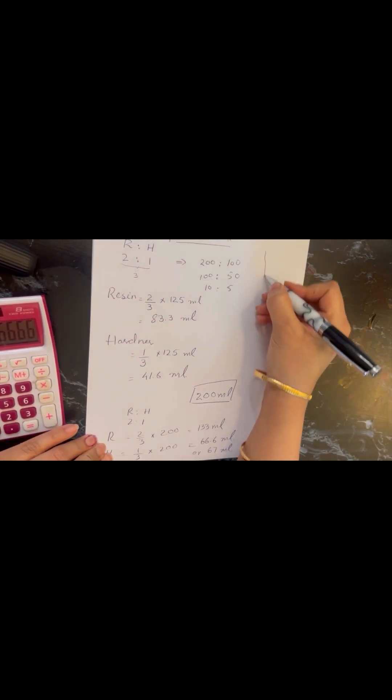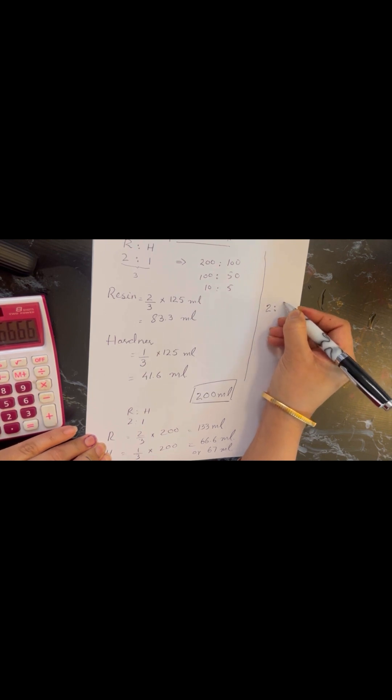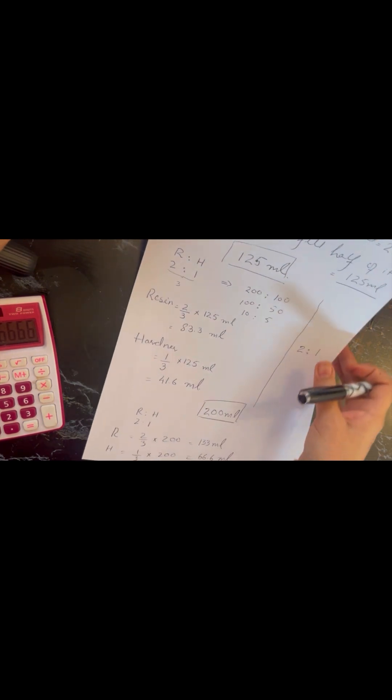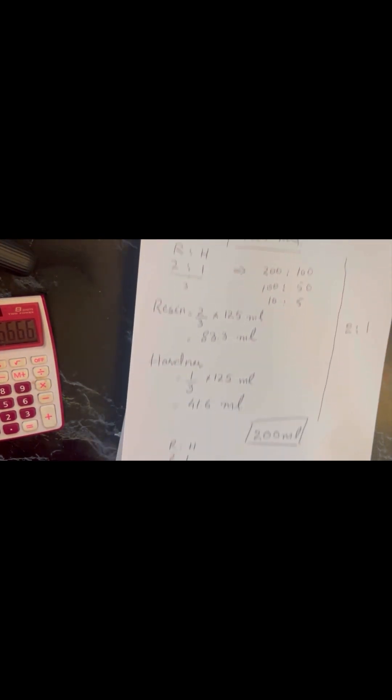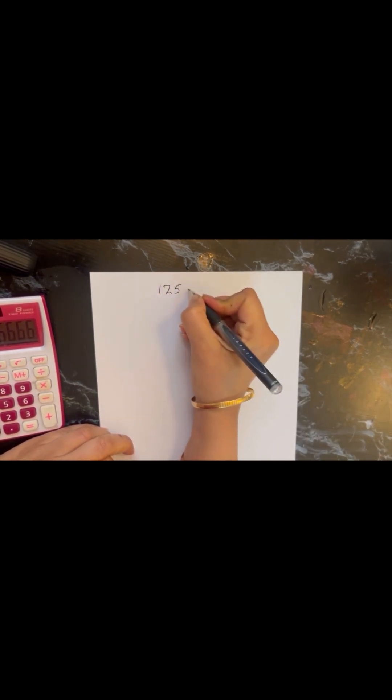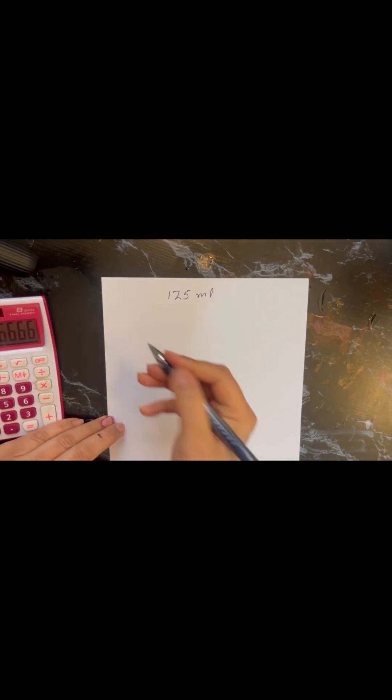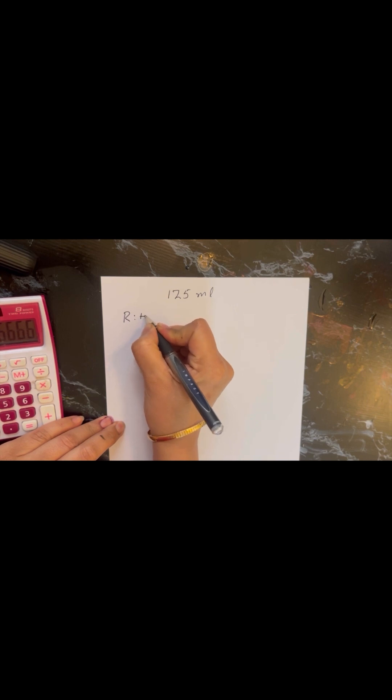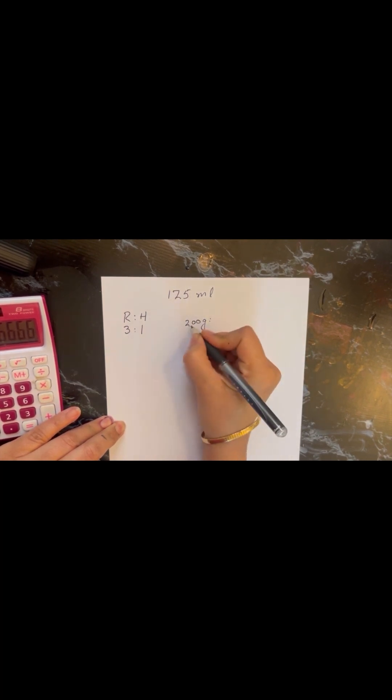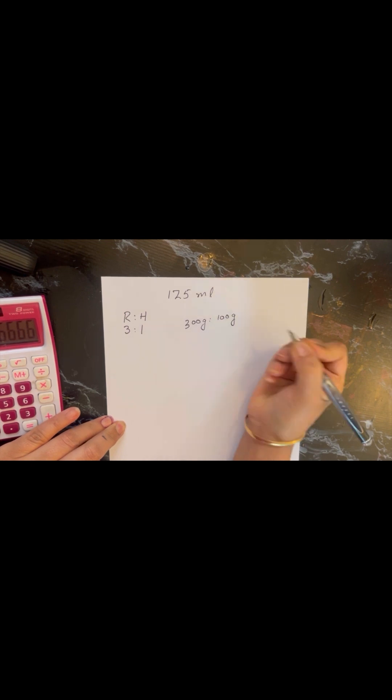Now I will show you this is for 2 ratio 1. Now I will show you how you can do the same for a resin that has a ratio of 3 ratio 1 - three parts of resin and one part of hardener - and together they are going to make 4 parts. So it's very easy, just like the one we have already done. If we want to measure for 125 ml and the resin is 3 ratio 1, sometimes you will also find it as 300 grams ratio 100 grams, so don't get confused, they all are same.